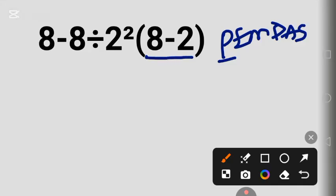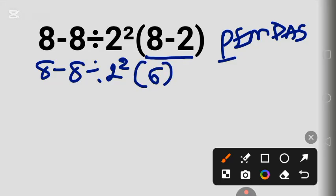8 minus 8 divided by 2 squared times 8 minus 2 is 6 in parentheses. Exponent is the next one. The exponent we have here is 2 squared.